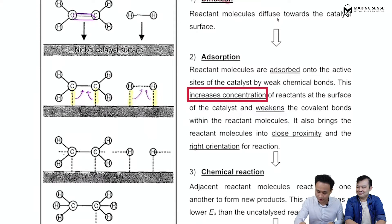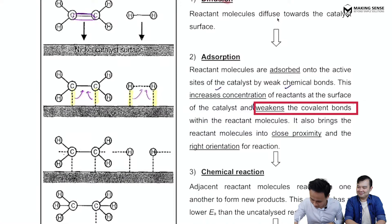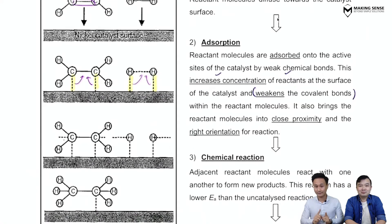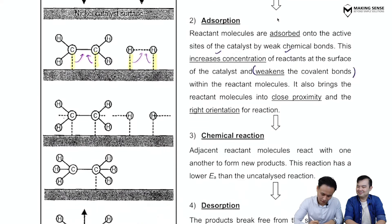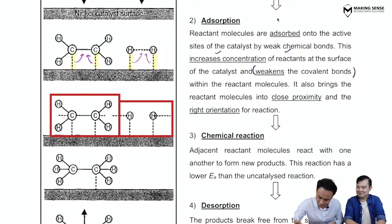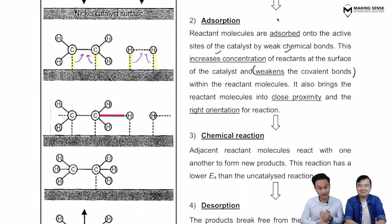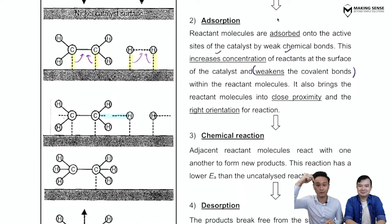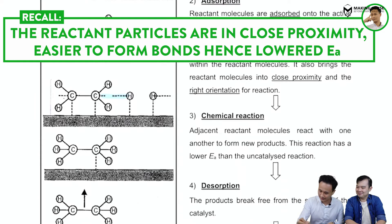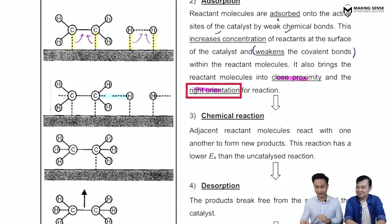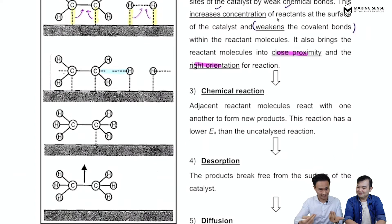Upon adsorption, the concentration of reactants on the surface increases and the covalent bonds are weakened. The reactant particles are now next to each other, so it is very easy to form bonds. Close proximity provides perfect orientation for reaction, lowering the activation energy — consistent with our definition of a catalyst.